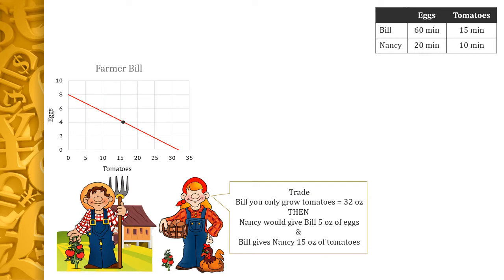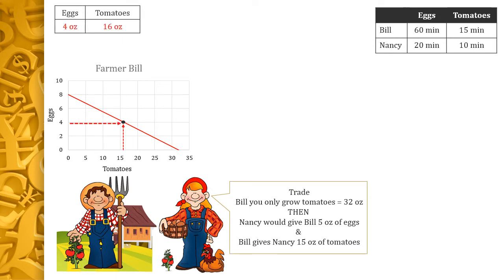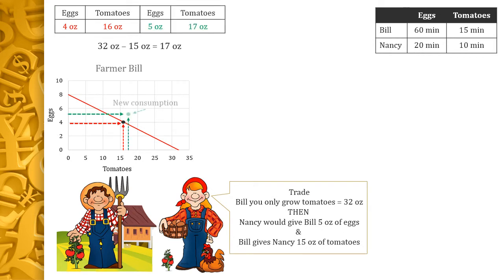Bill looks at his production curve. His current production at four hours of each is 4 ounces of eggs and 16 ounces of tomatoes. He figures that if he grows 32 ounces of tomatoes and gives Nancy 15, he'd still have 17 ounces of tomato. He compares this to his current situation and sees he'll wind up with more eggs and more tomatoes than he currently gets. That will be his new consumption at the green point.